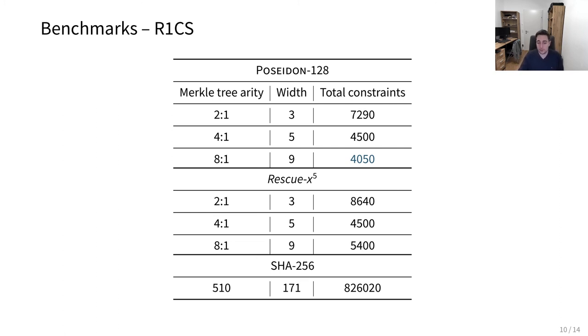What you can also see, interestingly, is that if we have this traditional hash function SHA-256, which is essentially not built for this use case but for other metrics, more traditional use cases, then we can see that the number of total constraints is much higher.